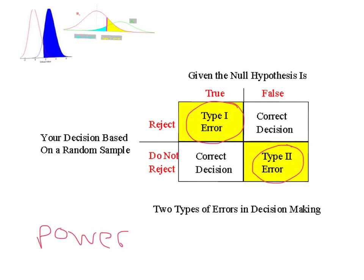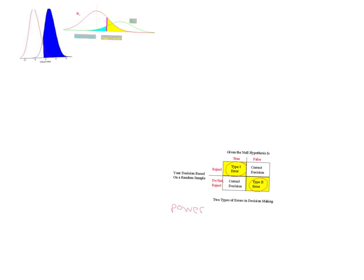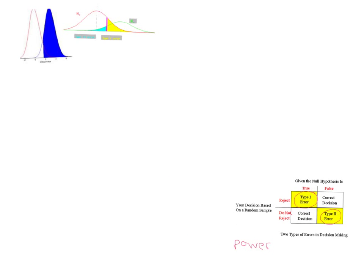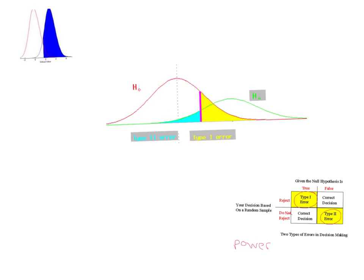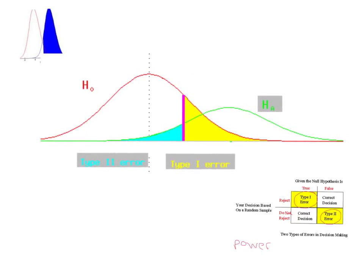First, the type 1 error. The type 1 error is where you reject the null hypothesis when, in fact, the null hypothesis is true. Now, in order for you to make a rejection, there has to be an alpha level set. So this pink line right here is the alpha level that's been set, whatever it may be. The yellow area that's in here is the area at which you will reject this null hypothesis, which is right here.